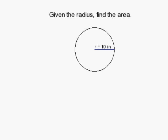How to find the area of a circle when given the radius. First, recall that the area of a circle is πr².